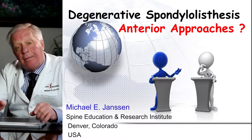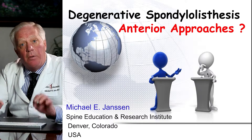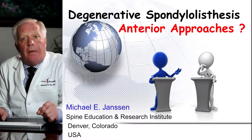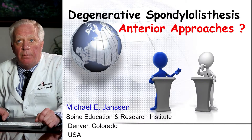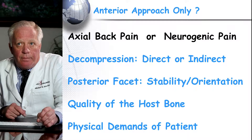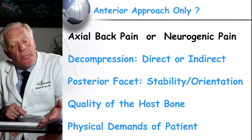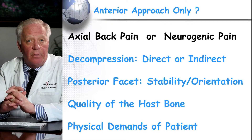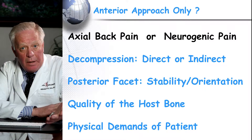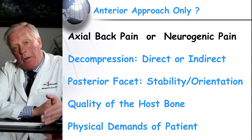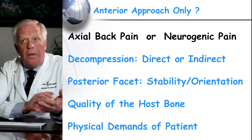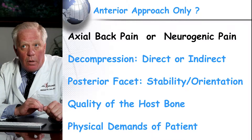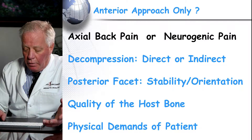I'd like to talk about how we manage degenerative spondylolisthesis from an anterior approach specifically at the Center for Spine and Orthopedics in Denver. The anterior approach means through the abdomen — operating anterior to the spinal nerves and the cauda equina in the low back, as compared to a posterior surgery. We tend to do that when a patient has axial back pain, meaning their disc is deteriorated and worn out, or sometimes when they have a combination of nerve pain.